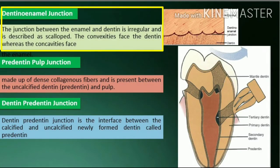Dentinoenamel junction: the junction between the enamel and dentin is irregular and is described as scalloped. The convexities face the dentin whereas the concavities face the enamel.